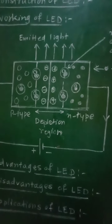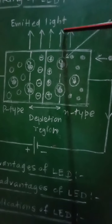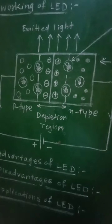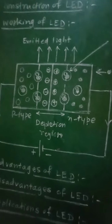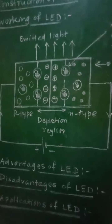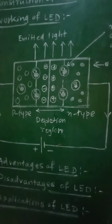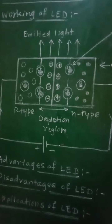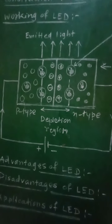The amount of light output is directly proportional to the forward current. For a small value of forward current, the intensity of light will be small. If forward current is increased, the light output increases. Thus, higher the forward current, higher is the light output.